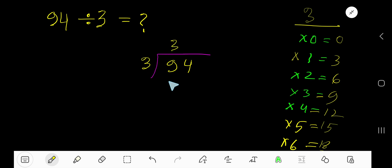3 times. 3 times 3 is 9, subtract 0. Bring down this 4. 3 goes into 4 how many times? 1 time, which is 3 times 1 is 3. Write 1, 1 times 3 is 3, subtract 1. So our answer is 31 remainder 1. But if we want to write our answer in decimal form, then what will happen?